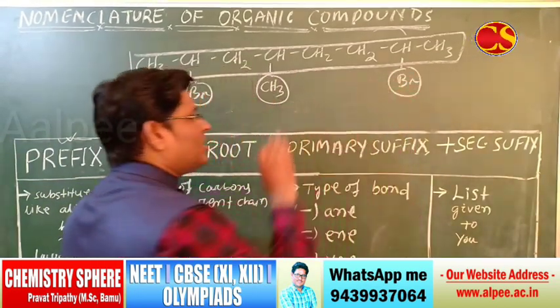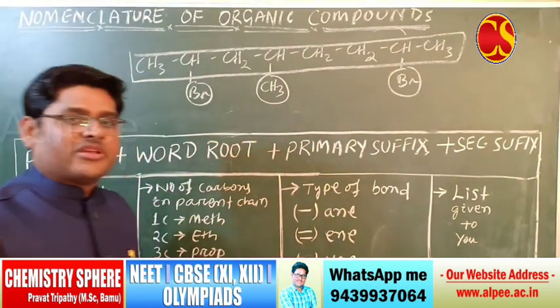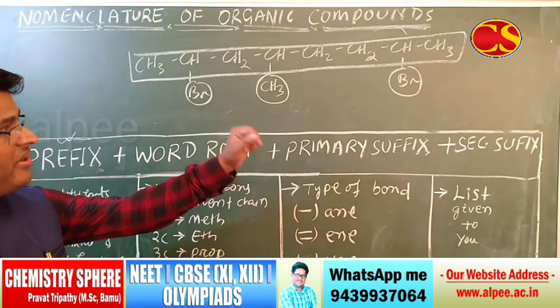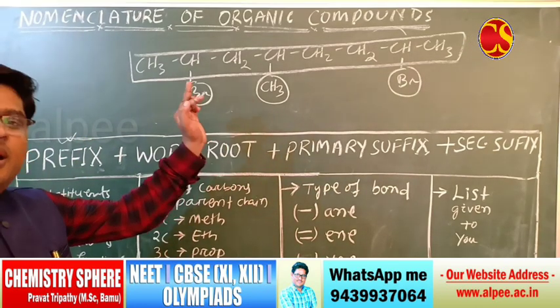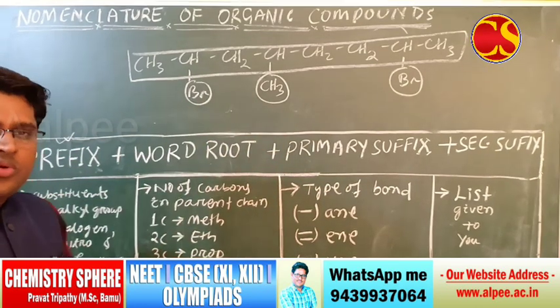Apart from the parent chain, all other parts are called substituents. Here, three substituents are present: bromine, methyl, and bromine.